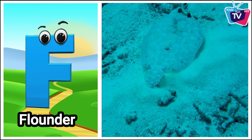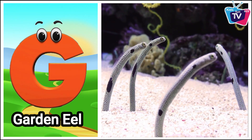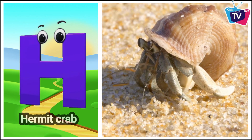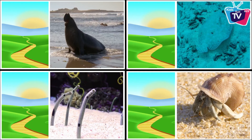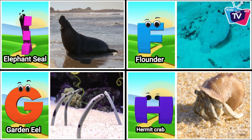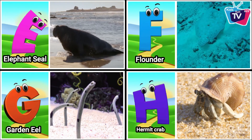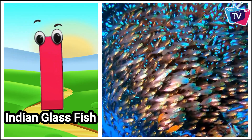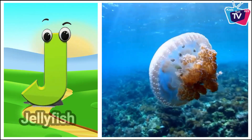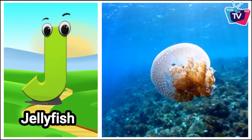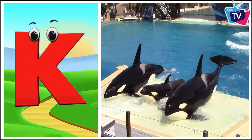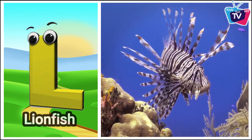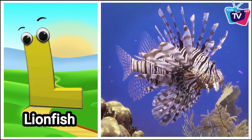Flounder. G is for Garden Eel. Garden Eel. H is for Hermit Crab. Hermit Crab. I is for Indian Glass Fish. Indian Glass Fish. J is for Jellyfish. Jellyfish. K is for Killer Whale. Killer Whale. L is for Lionfish. Lionfish.